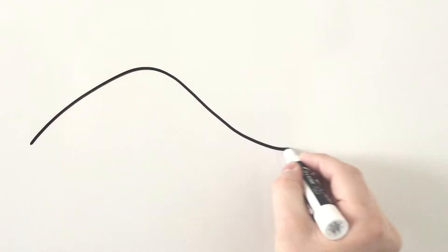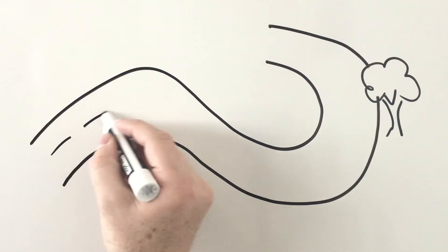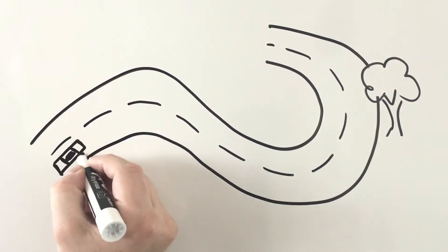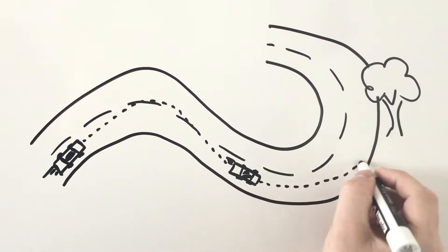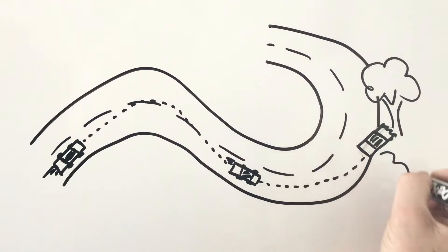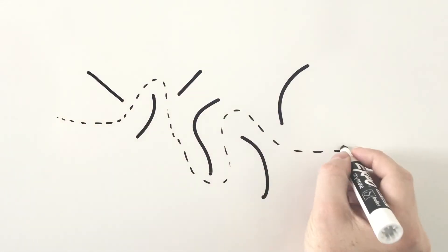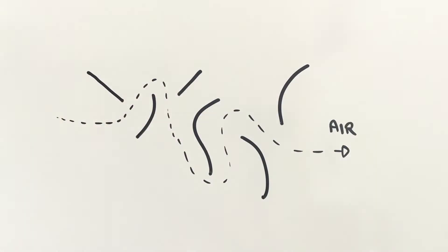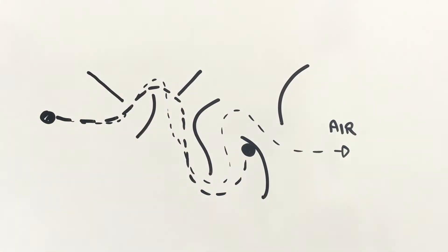To understand why, imagine for a moment a car speeding along a winding road. The car fits easily on the road, but if it's going too fast, it won't be able to navigate the bends — and at some point, it's going to crash. It's the same for small particles speeding through an air filter. As the air twists and turns, the particles can't keep up, and ultimately they end up crashing out and being caught.